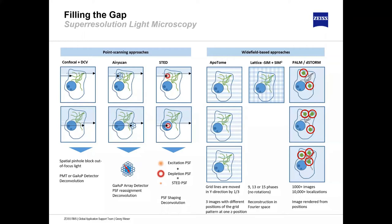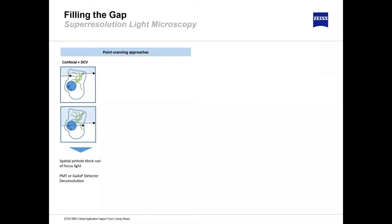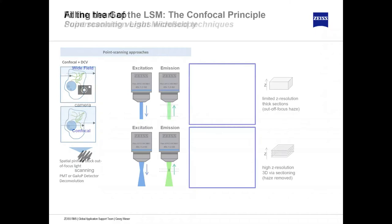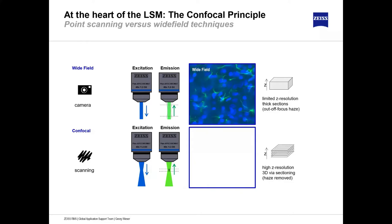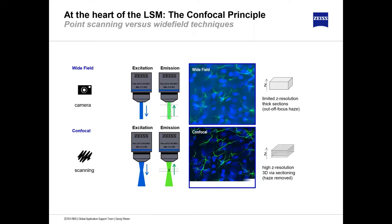We start with confocal combined with deconvolution. In wide field microscopy, the whole field of view is illuminated evenly and the emission light is captured with one camera snap — saving time, but with thicker samples the out-of-focus light blurs the image and reduces contrast and resolution. In confocal microscopy, only one focal point is illuminated at a time. You invest time to scan your sample, but you get contrast and good resolution.